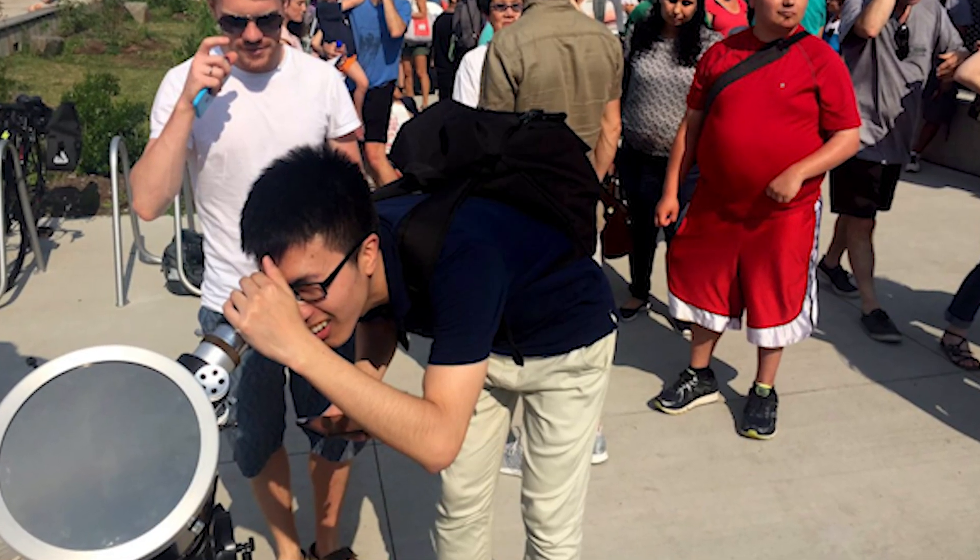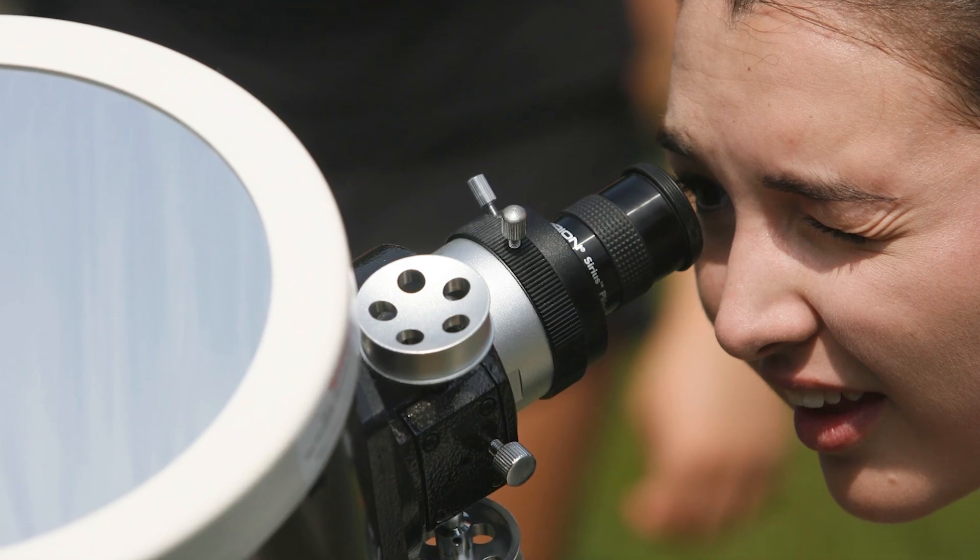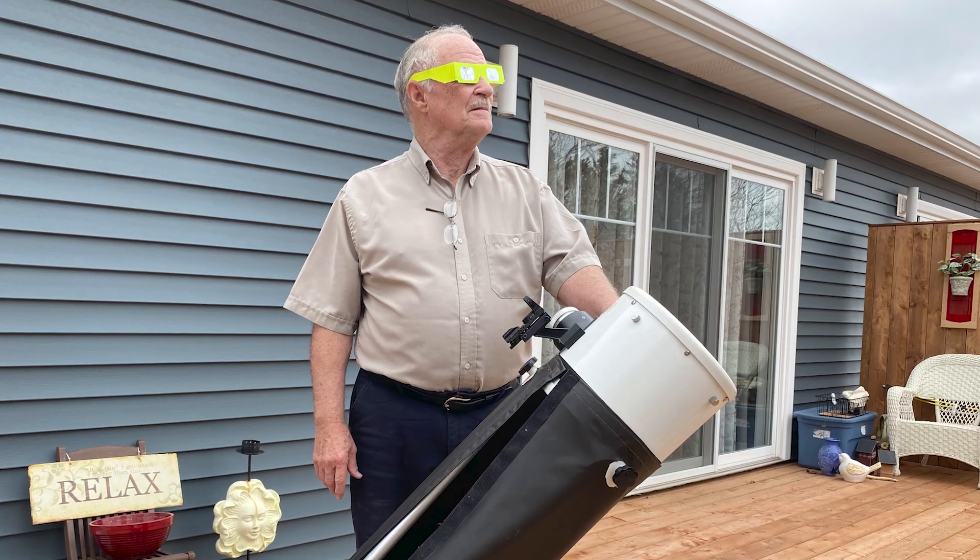So when it comes to the eclipse, obviously you mentioned that totality will be over New Brunswick, PEI. Here in Nova Scotia, it's going to be partial. So what should people expect? Because I feel even though it's a partial eclipse, people might have expectations that this is going to be a very dramatic event and we're going to see the moon passing in front of the sun. But in reality, with a partial eclipse, unless you're really near that path of totality, it might be a little more challenging. Absolutely.